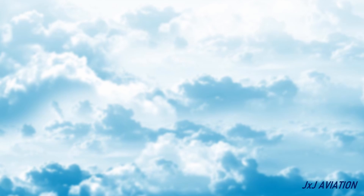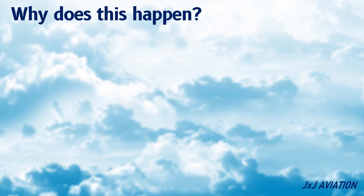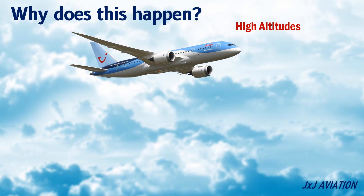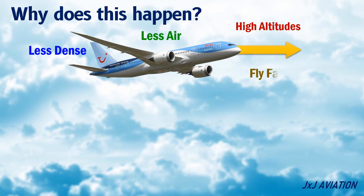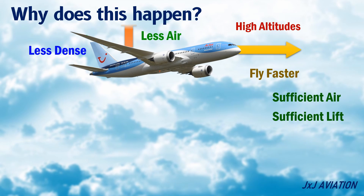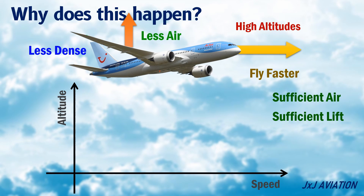Why does this happen? When an aircraft flies at very high altitudes, the air is less dense, hence there is less air flowing across the wing. The aircraft has to fly faster to ensure there is sufficient air across the wing and sufficient lift is generated. So basically, the stall speed of the aircraft increases with an increase in altitude.